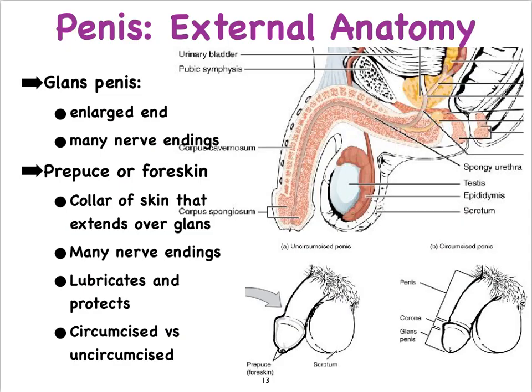Looking at the external anatomy of the penis, the tip is slightly enlarged — we refer to that as the glans penis, which is very sensitive, having many nerve endings. In an uncircumcised penis, it is covered by what we in layman's terms call the foreskin, or in anatomical terms the prepuce. This collar of skin stretches over the glans penis, is full of nerve endings making it sensitive, and also helps protect and lubricate that part of the penis.